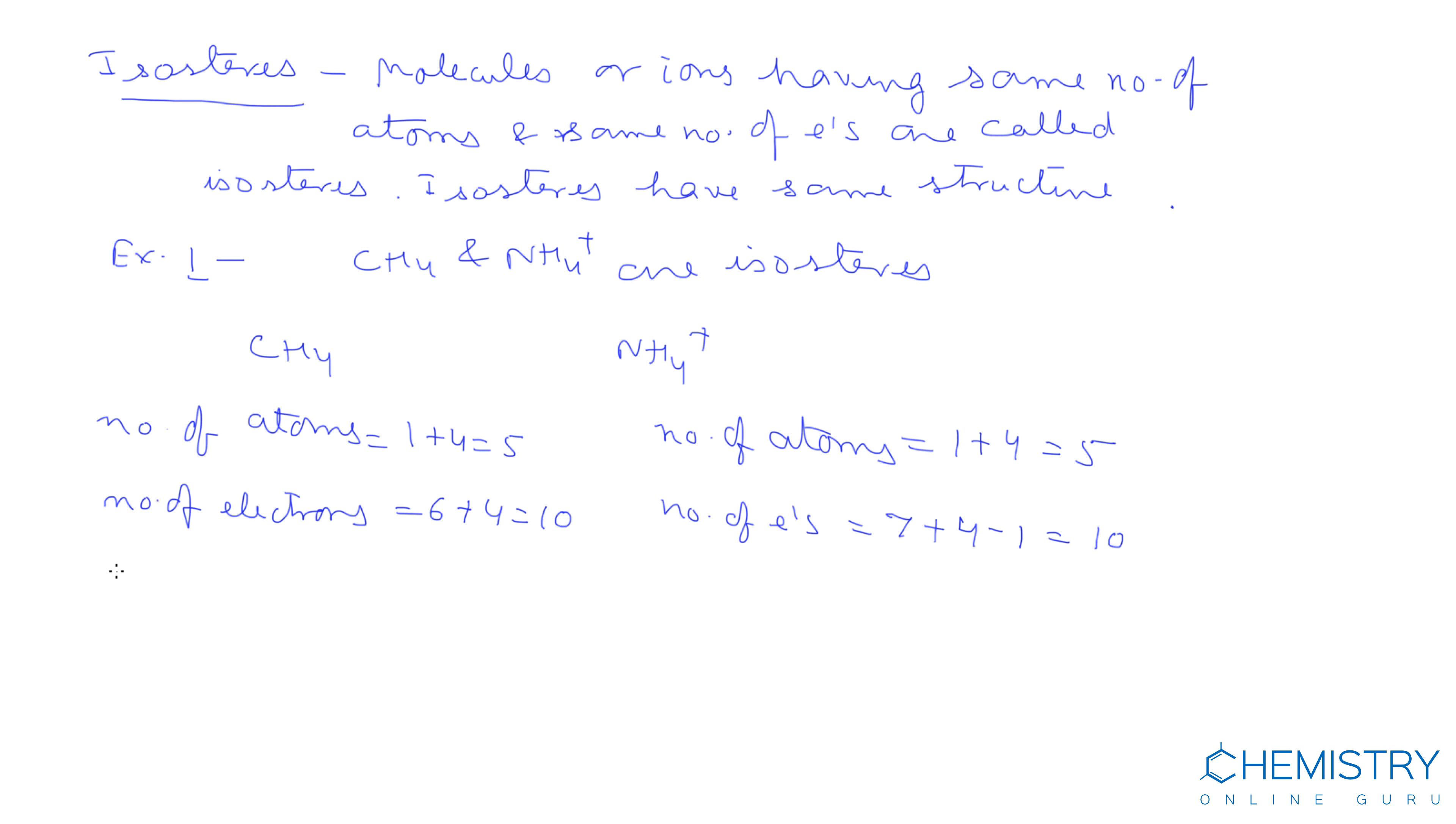The geometry of methane is tetrahedral. In the case of ammonium ion, it is also tetrahedral geometry. When the number of atoms, number of electrons, and structure are all the same, these are examples of isosters.